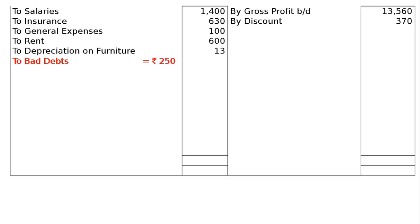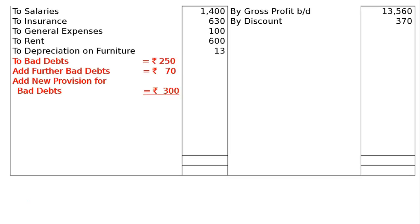To this bad debts figure we have to add further bad debts given in adjustment four: write off further bad debts of Rs. 70. We add this to the bad debts already in the trial balance debit column, then deduct it from debtors. Per adjustment 4, provision for doubtful debts to be increased to Rs. 300 as new provision. Adding new provision Rs. 300 gives a total of Rs. 620, less existing provision for bad debts Rs. 250, leaving a final profit and loss amount of Rs. 370.